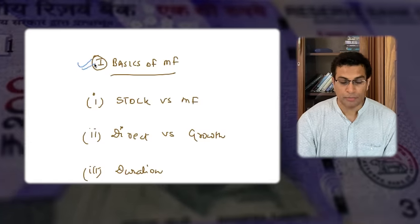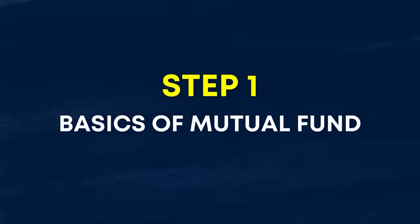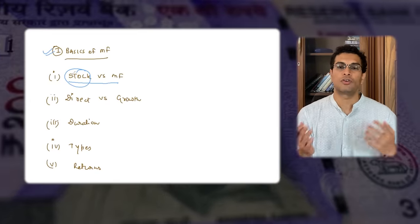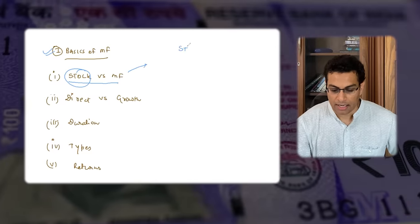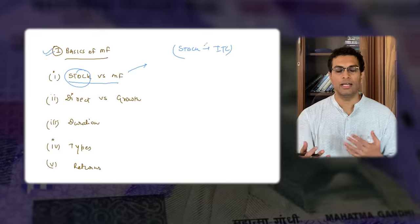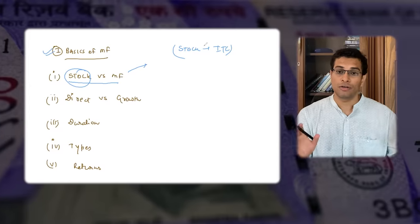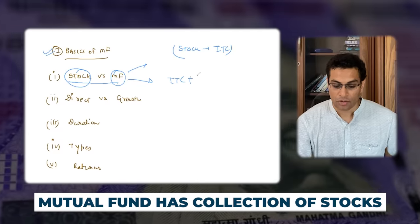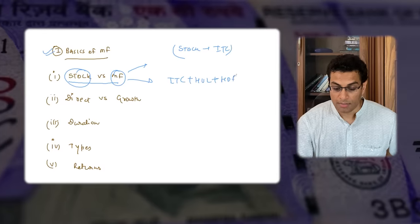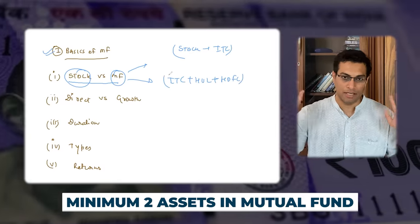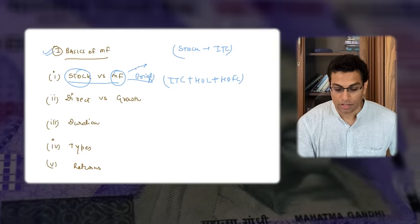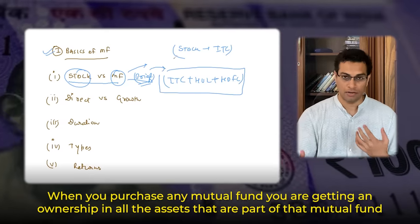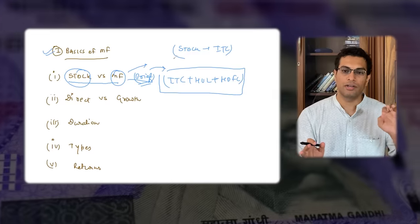Let me take you through the basics of mutual funds — five very important ones. First, let us understand the difference between a stock and a mutual fund. A stock is equity — if I am buying ITC, I am directly purchasing a part of a business. A mutual fund, on the other hand, is a collection of different assets. It could have ITC, HUL, HDFC Bank — minimum two assets, maximum limitless. A mutual fund is nothing but a briefcase. When you purchase a mutual fund, you get ownership in all the assets that are part of it.